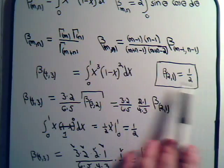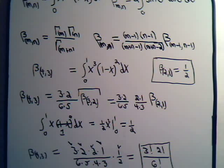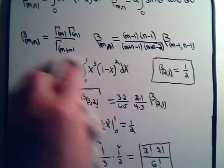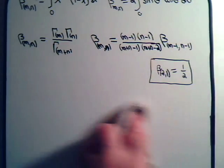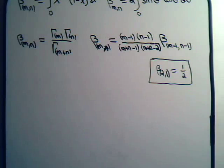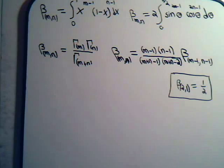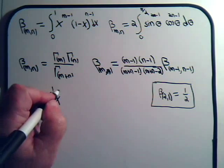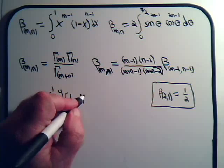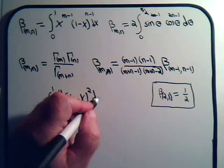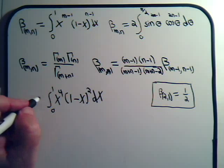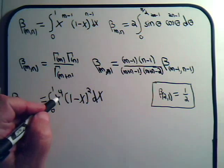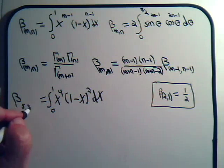We also wanted to derive this relation. As you can see, the beta function can be pretty handy for solving different types of integrals. Let's take one more straightforward example: the integral from 0 to 1 of x to the 4th times (1 minus x) squared dx, which equals the beta function of 5, 3.